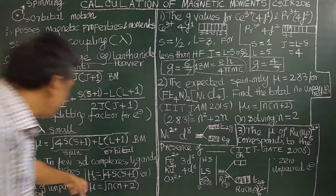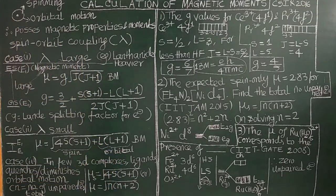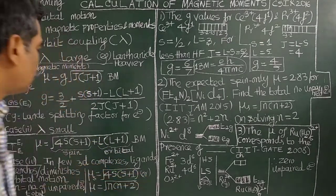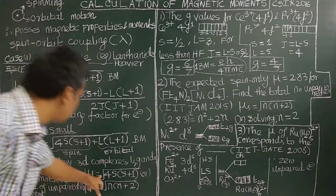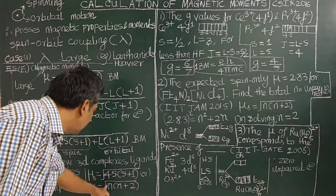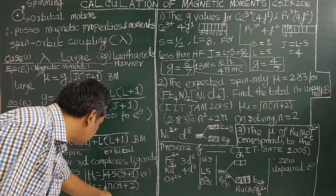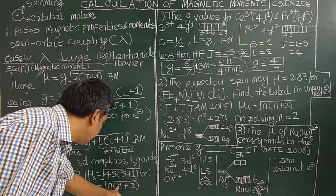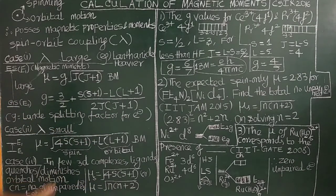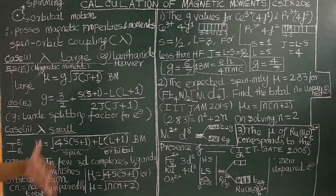Therefore, the spin-only magnetic moment formula is applied to calculate the magnetic moment of such complexes: mu equals the square root of n(n+2) Bohr magnetons, where n equals the total number of unpaired electrons. You can calculate the magnetic moment if you know the number of unpaired electrons, or find n from a given magnetic moment.